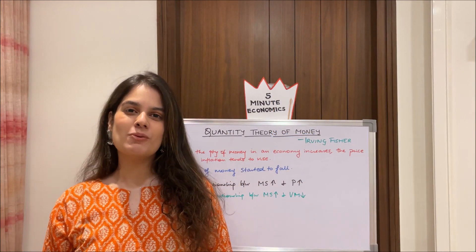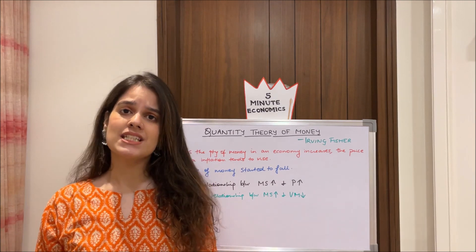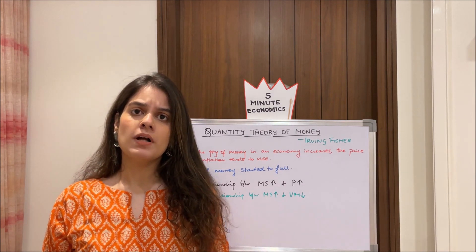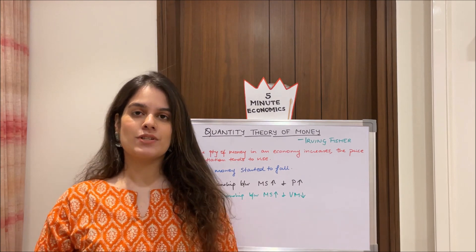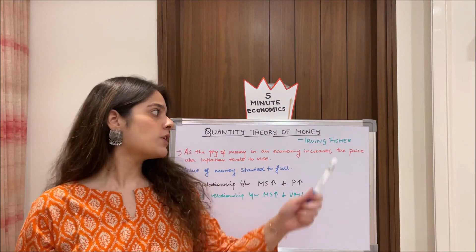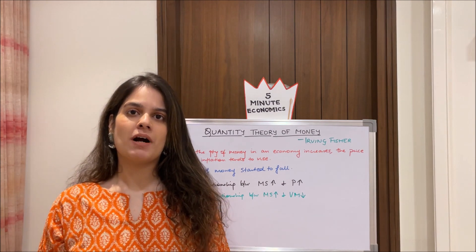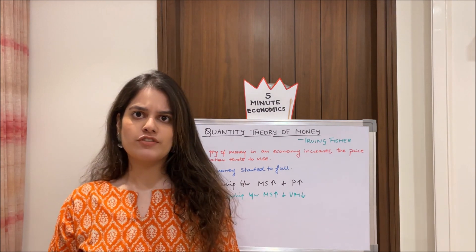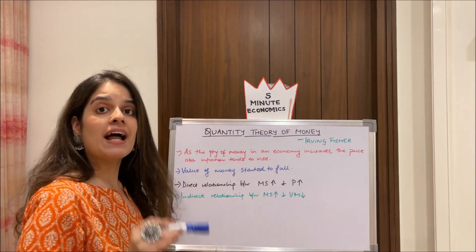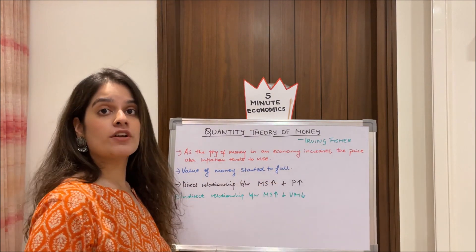Before we begin, let me give you a little background of this theory. It dates back to the 16th century, when it was observed that as money flowed from America to Europe, prices in Europe started to increase because the money supply in Europe increased. This theory was formally brought up by Irving Fisher in the year 1911 in his book 'Purchasing Power of Money.' Fisher observed that as the quantity of money in an economy increases, prices — aka inflation — tend to rise.